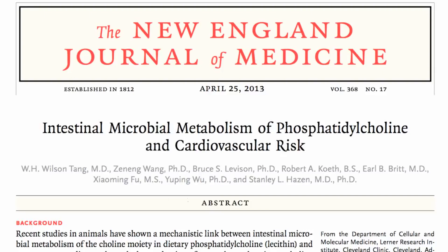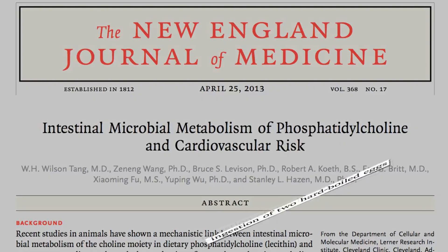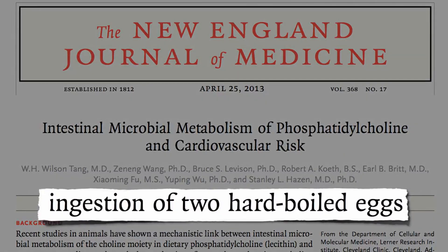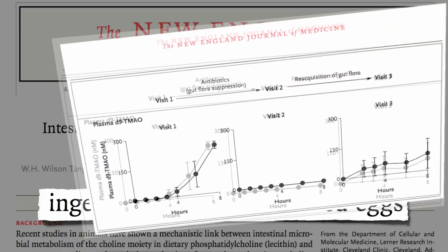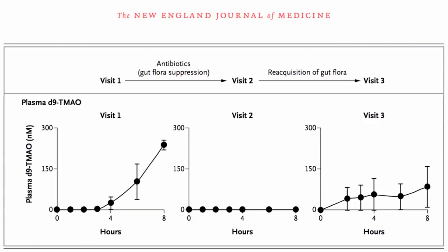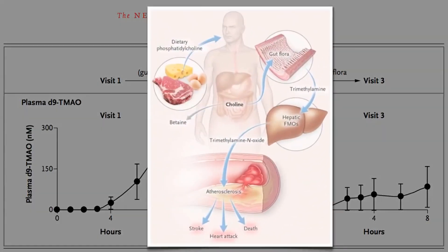Just recently, in the New England Journal of Medicine, that same Cleveland Clinic research team that did the carnitine study repeated the study — but this time instead of feeding people a steak, they fed people hard-boiled eggs, and just as they suspected, a similar spike in that toxic TMAO. So it's not just red meat.